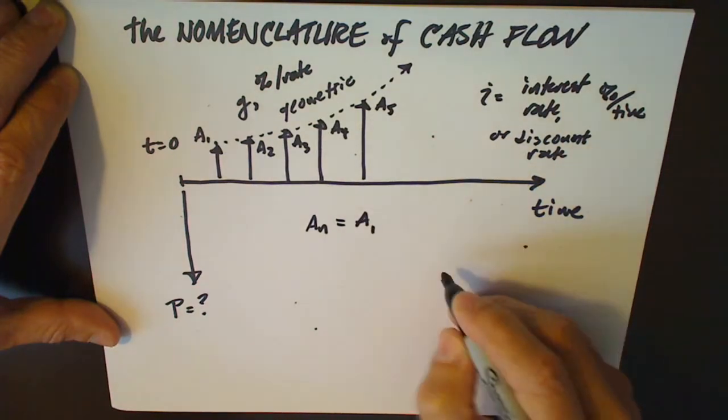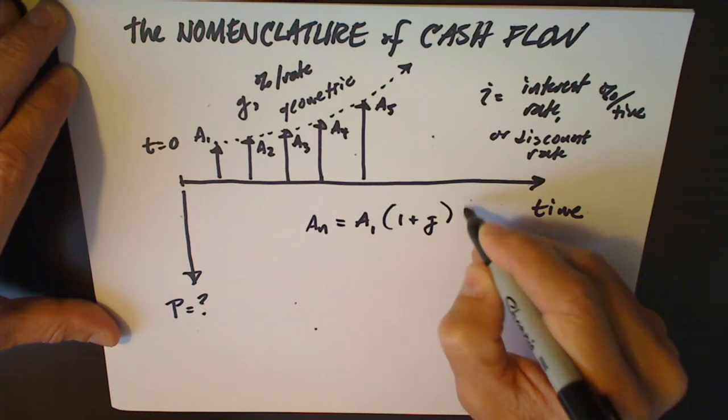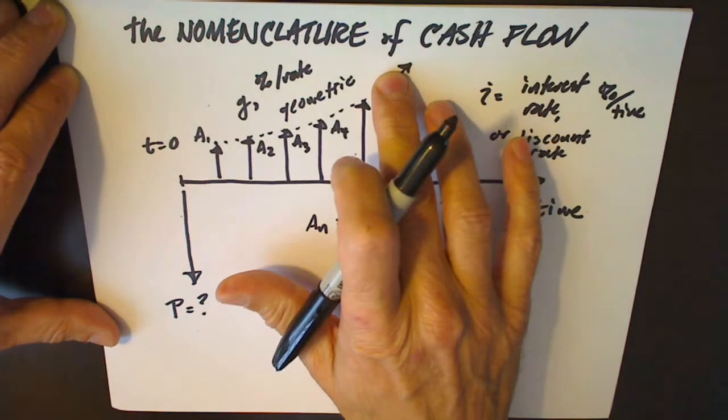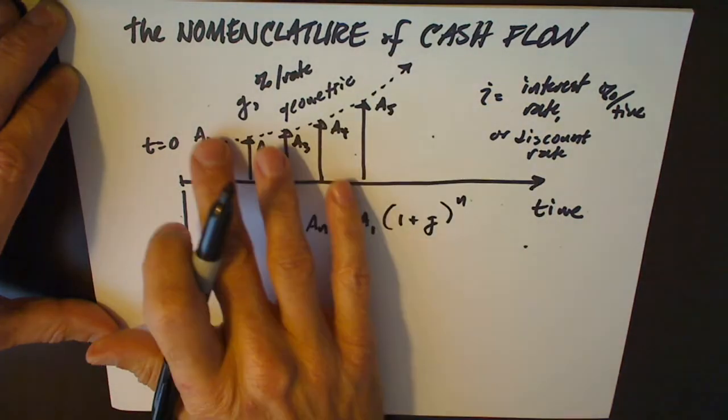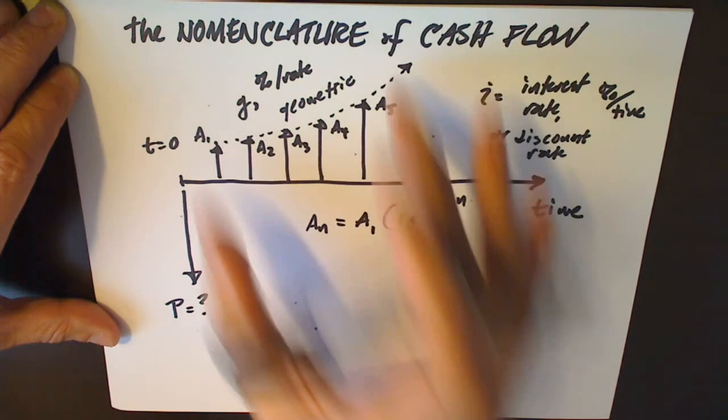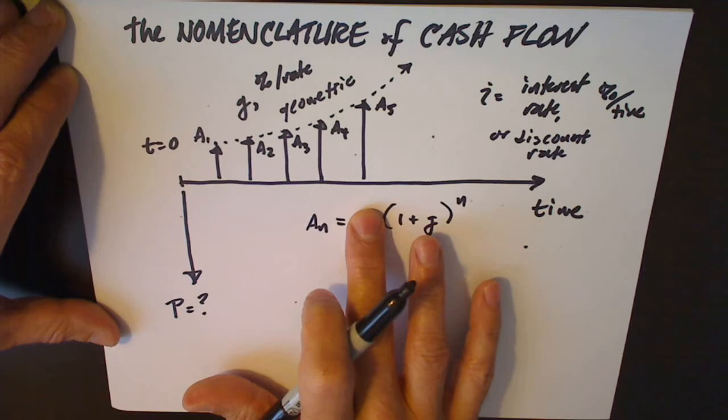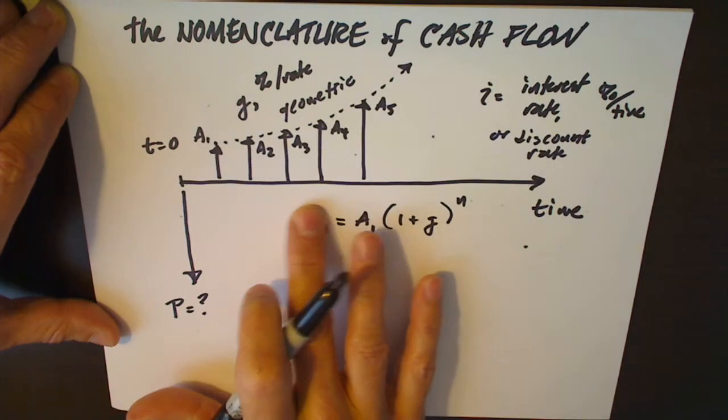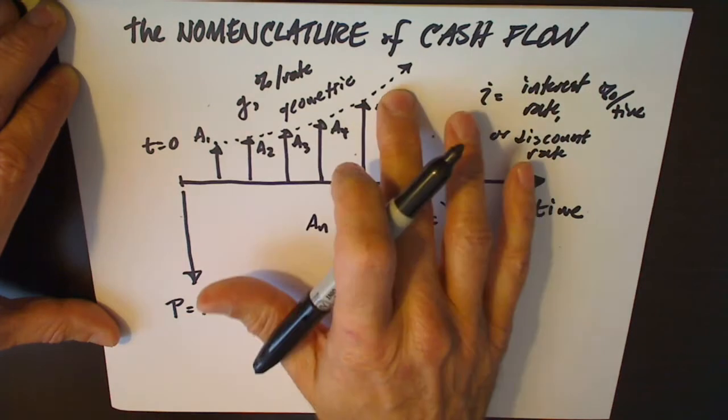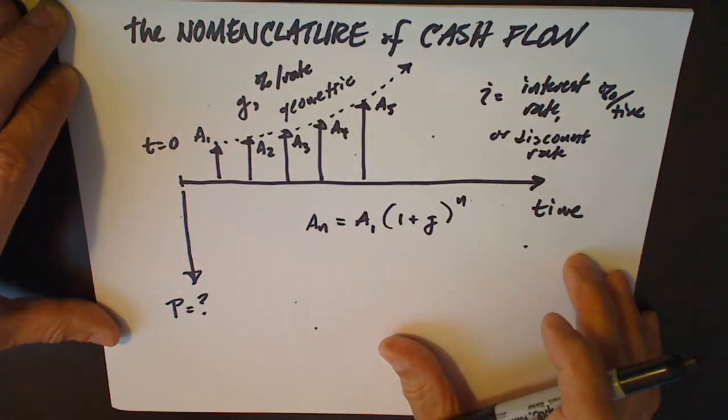And because they grow geometrically, we know that A to the n equals A1 times 1 plus the growth rate raised to the number of compounding periods. It's the same equation that we used to calculate the geometric growth of a bank balance in our first video. This would have been P and this would have been F and this would have been the interest rate. But in this case it's not the balance, it's the payments, it's the profits that are growing exponentially. So we need a more complicated way to calculate the present worth.